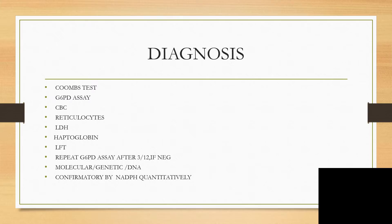Then you do liver function tests, and a repeat G6PD assay after three months. If the initial result is negative but you are still suspicious of G6PD deficiency, advise the individual or parents to return in three months for a repeat G6PD assay — it is likely the repeat will confirm the diagnosis. So if it is negative today, repeat the G6PD assay in three months.